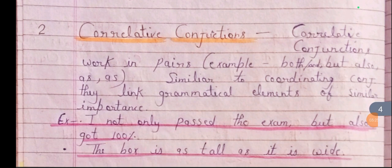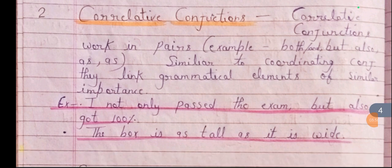Second is correlative conjunctions. Correlative conjunctions work in pairs — for example, 'both/and,' 'as/as.' Similar to coordinating conjunctions, they link grammatical elements of similar importance.